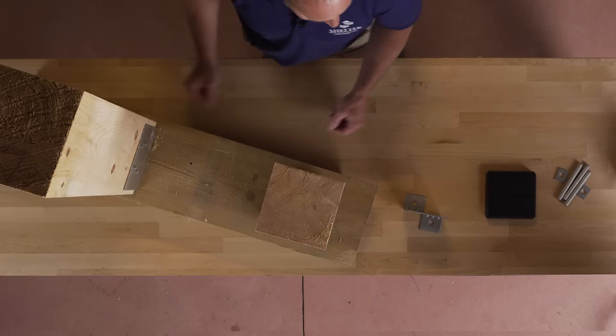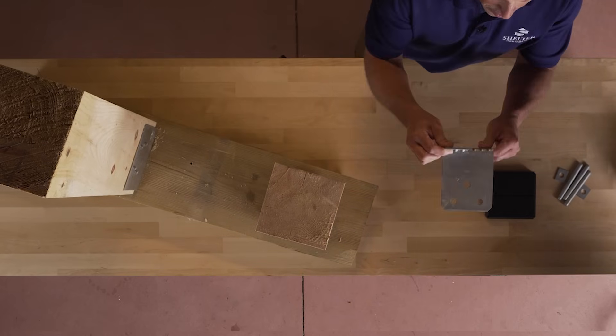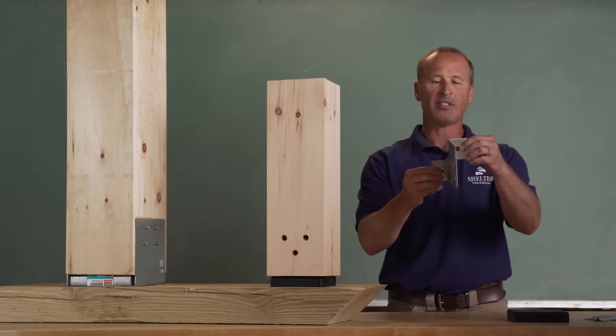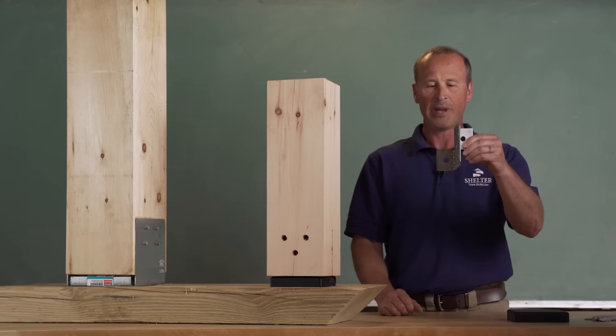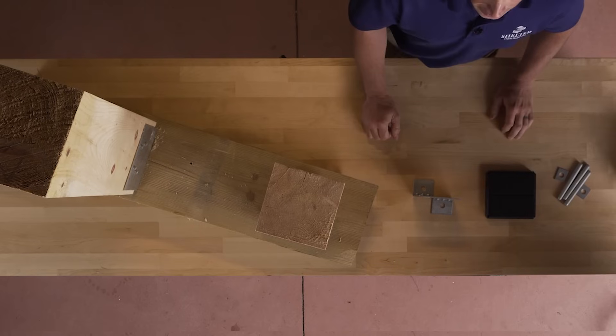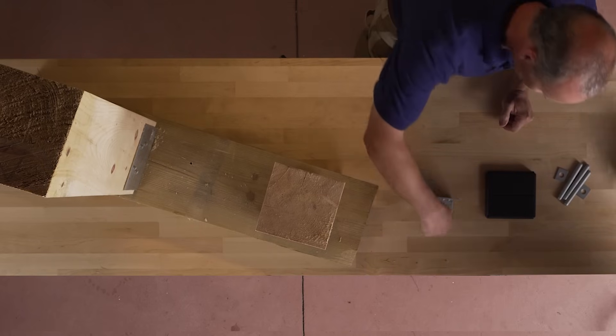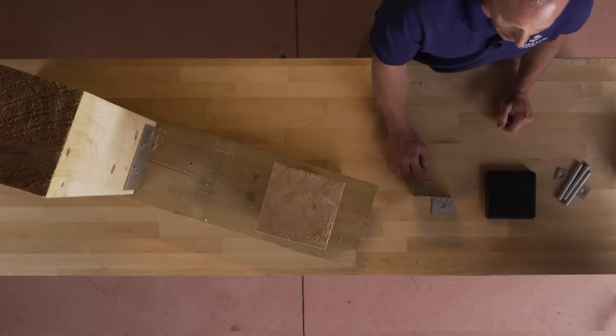What you can't see under here is the attachment of the post base to the foundation. So in the case of this CPTZ, which is their concealed post base, there are two holes drilled in the steel flange and we would use the Simpson Titan HD again, drill through that and bolt this directly to the concrete.